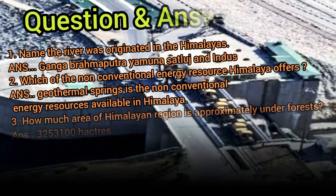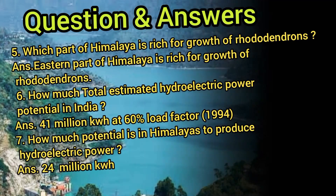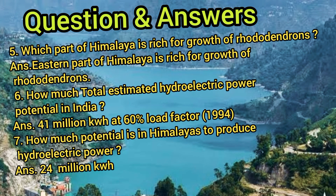Now here are some important questions. Name the rivers originating in the Himalayas — these are Ganga, Brahmaputra, Yamuna, Satluj and Indus. Which non-conventional energy resource does the Himalaya offer? Geothermal springs. How much area of the Himalayan region is approximately under forest? 32,53,100 hectares. In which part of Himalaya do conifers exist? The western part. In which part are rhododendrons found? The eastern part.